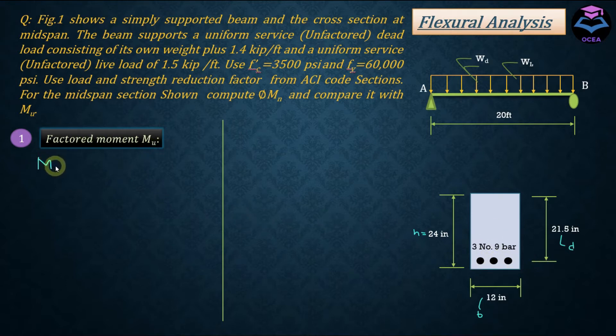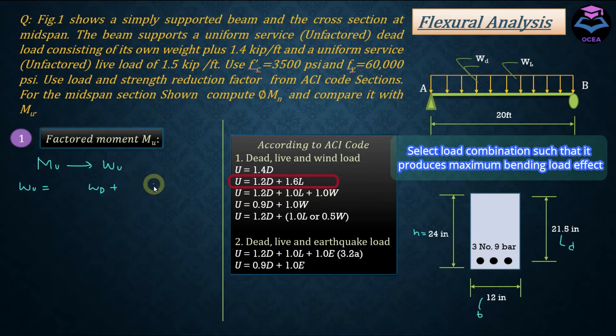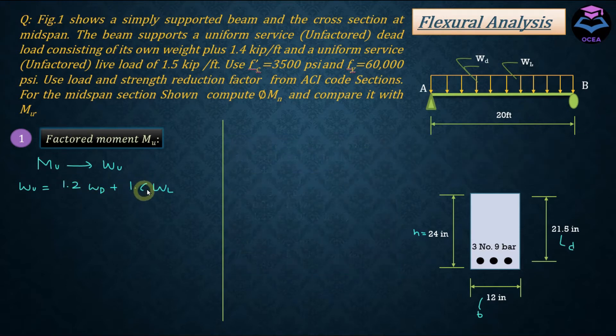To calculate MU first I need to evaluate the factored UDL coming onto this beam. So we have service dead load and service live load, that is unfactored loads have been given. To obtain WU, WU is equal to uniform service dead load represented by WD plus uniform service live load. According to ACI code, dead load should be multiplied by 1.2 and live load is multiplied by 1.6 to convert them into factored loads, and this whole thing is called the load combination. The value of WL is given as equal to 1.5 kip per foot, and W dead load is equal to 1.4 kip per foot plus the self weight of the beam.